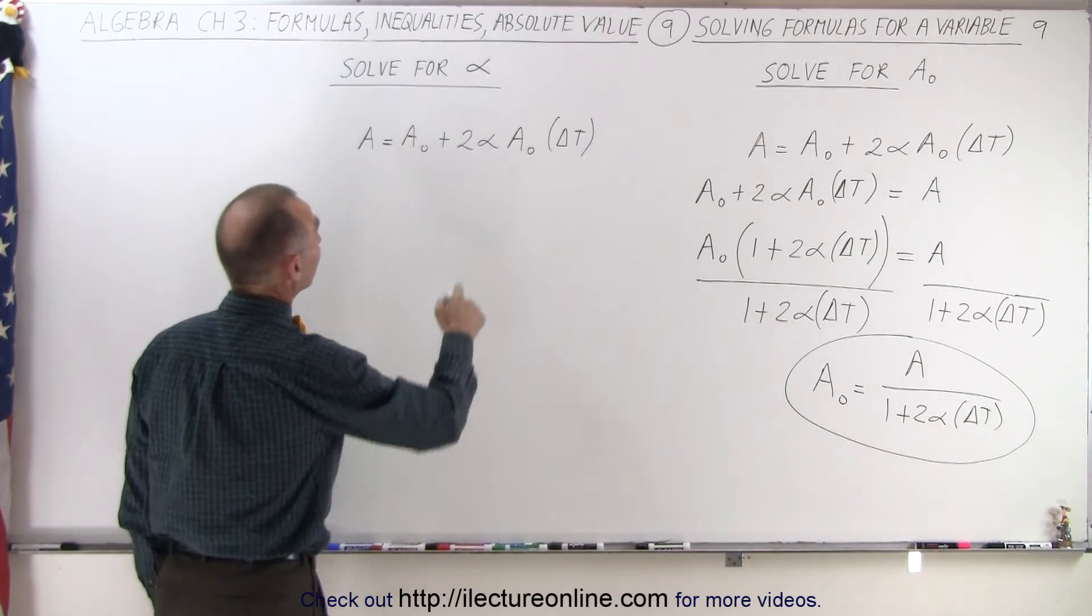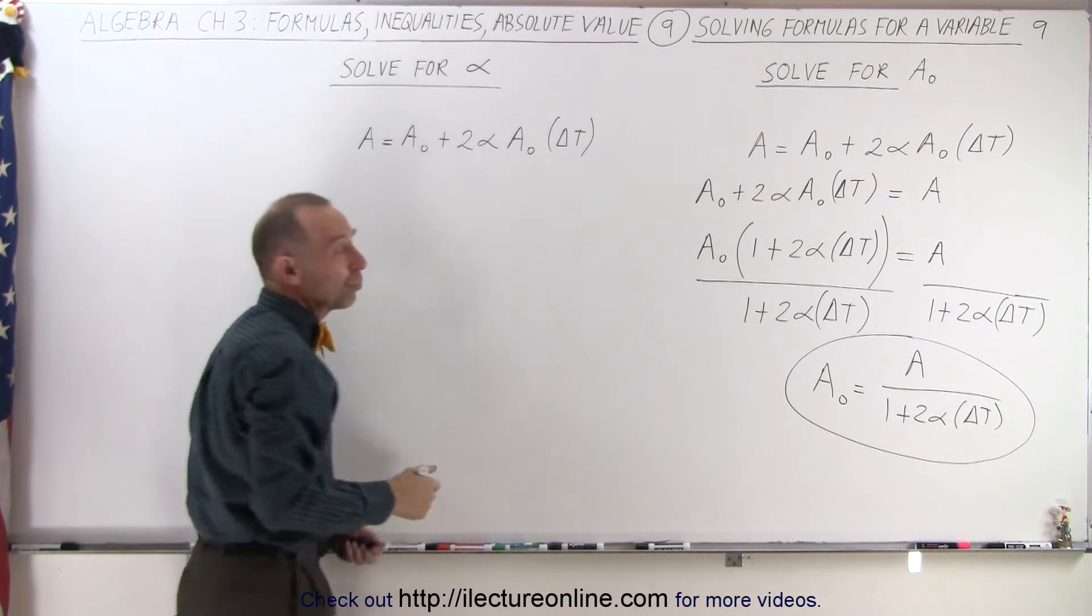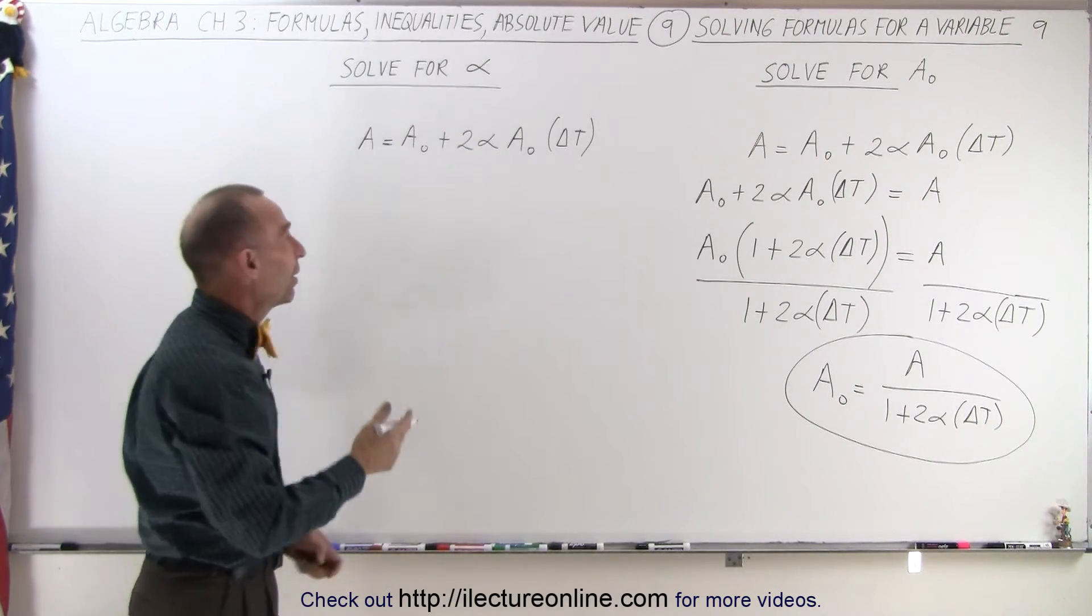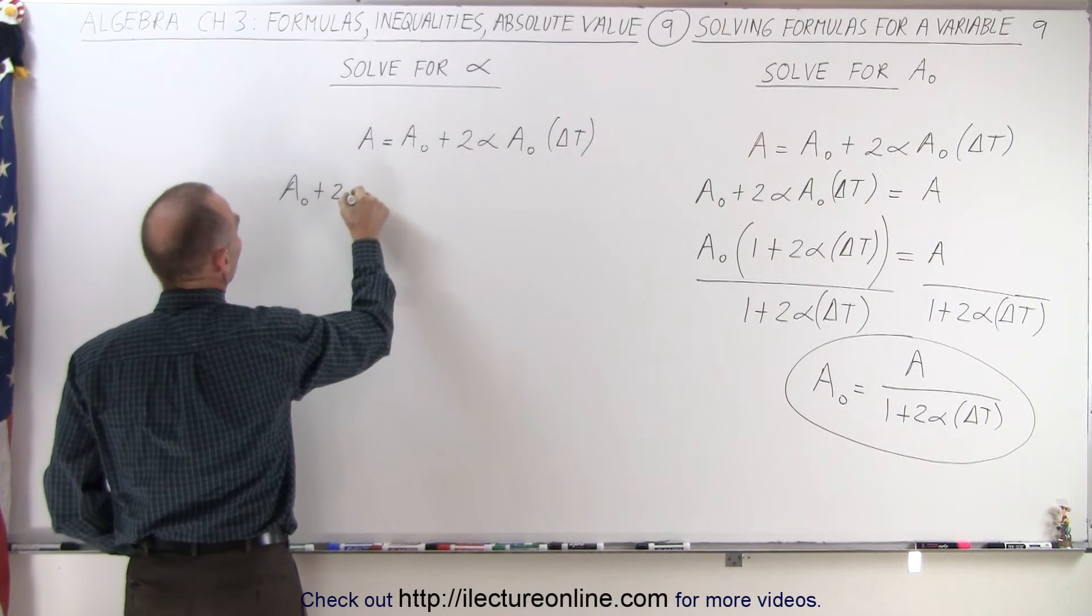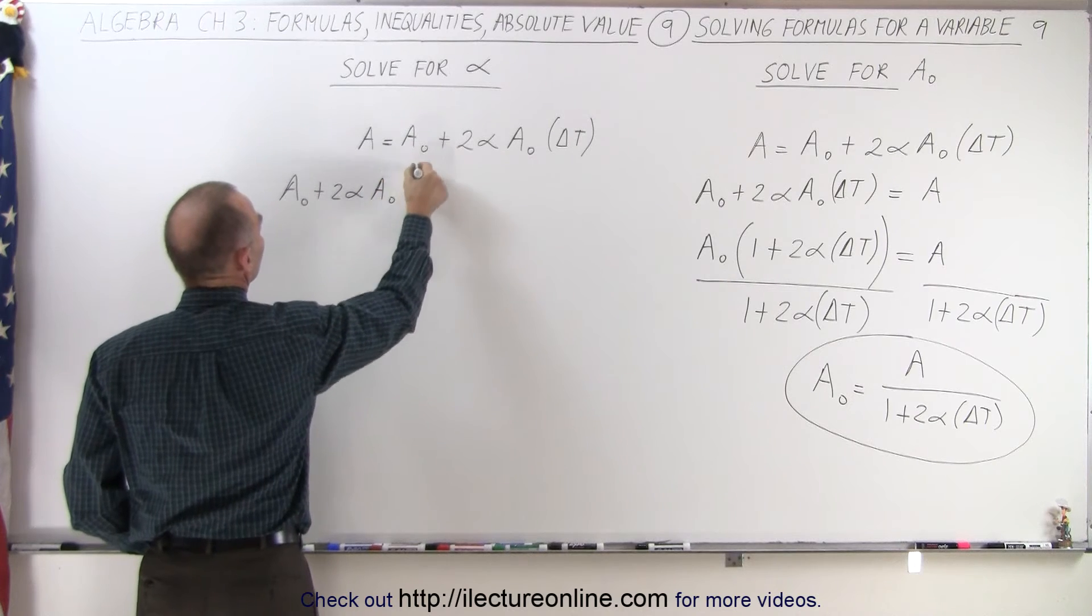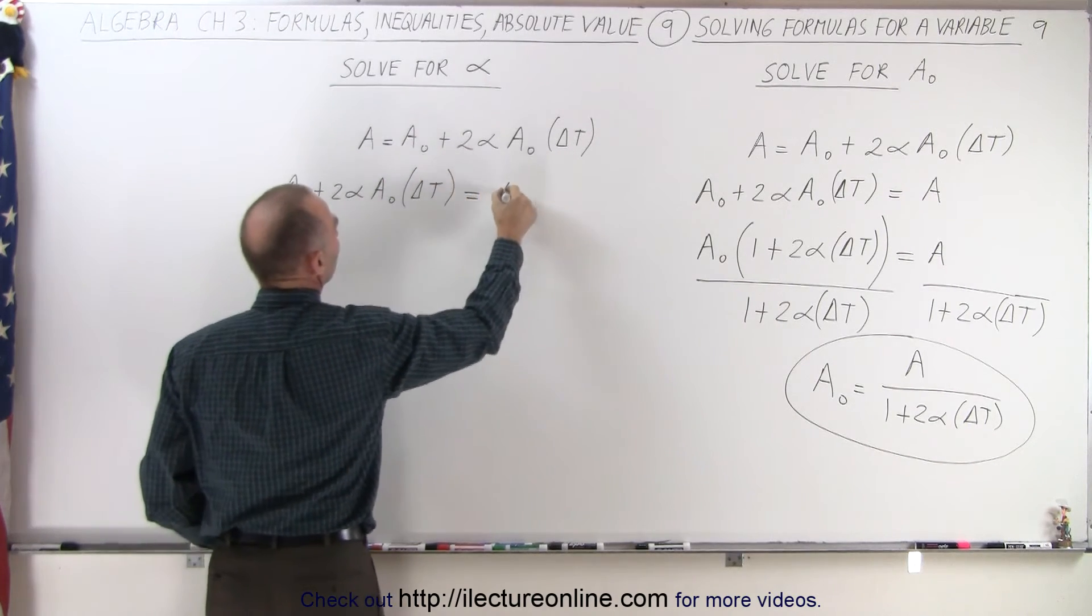On the second try, we're going to solve it for alpha, which means I need this term on the left side. I might as well do the same thing, simply flip the equation around. So on the left side, I end up with A sub nought plus 2 alpha A sub nought times delta T. And on the right side, just like before, we end up with the A.